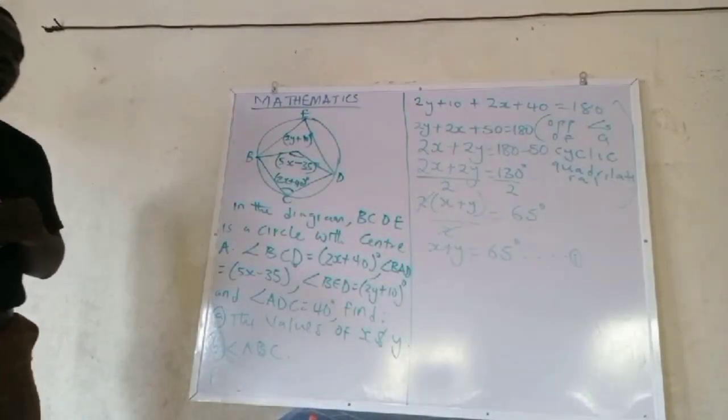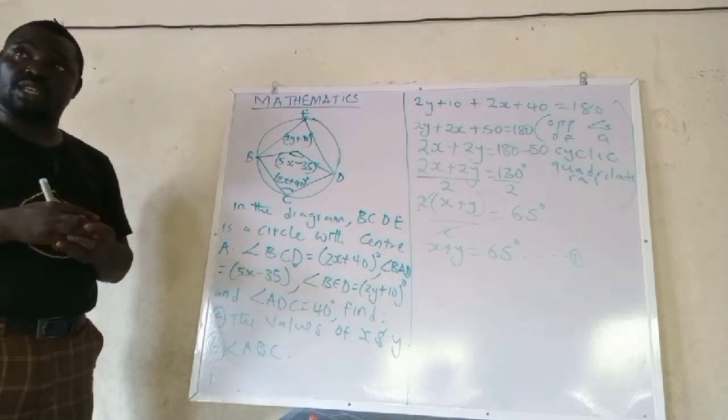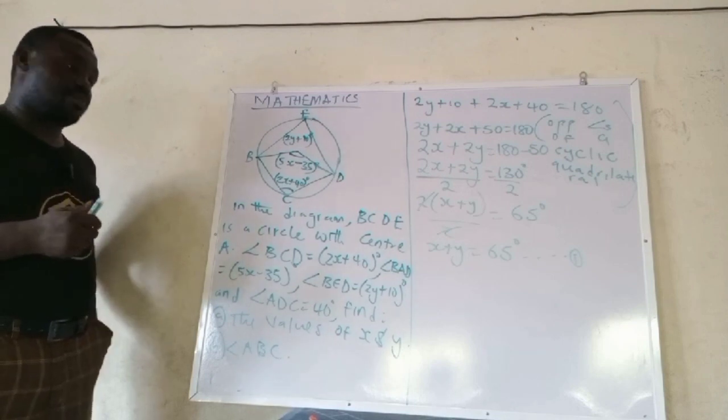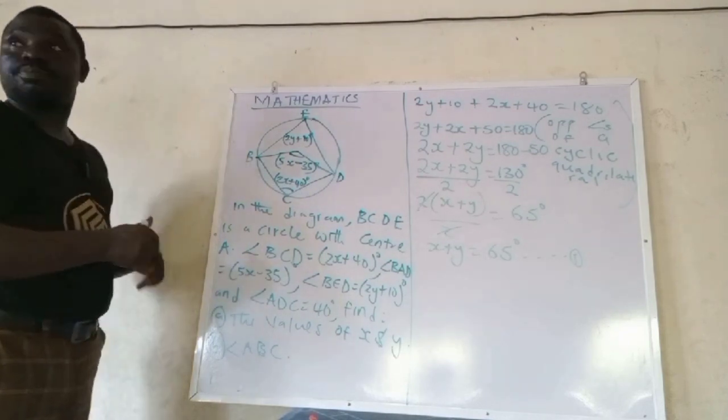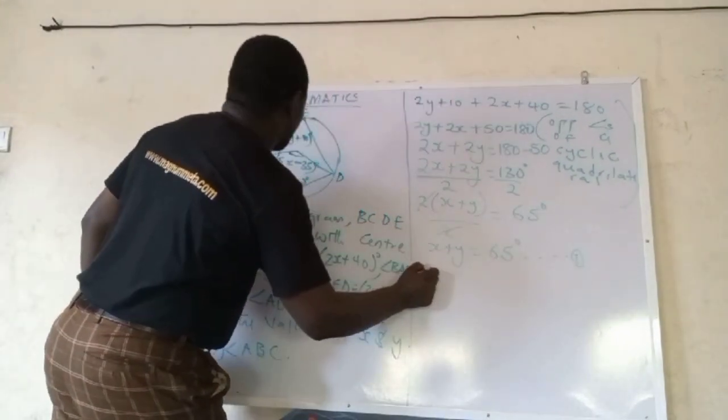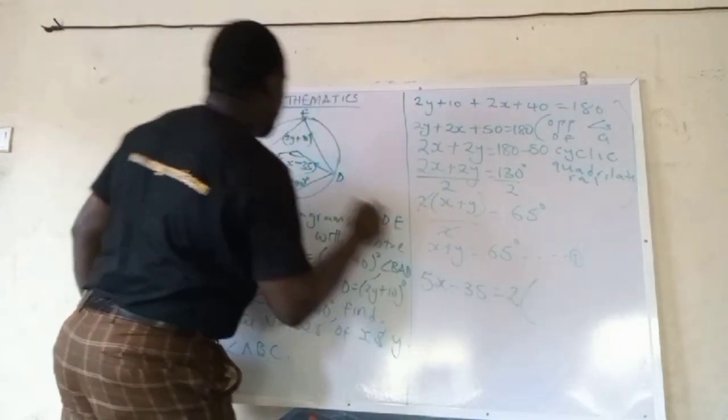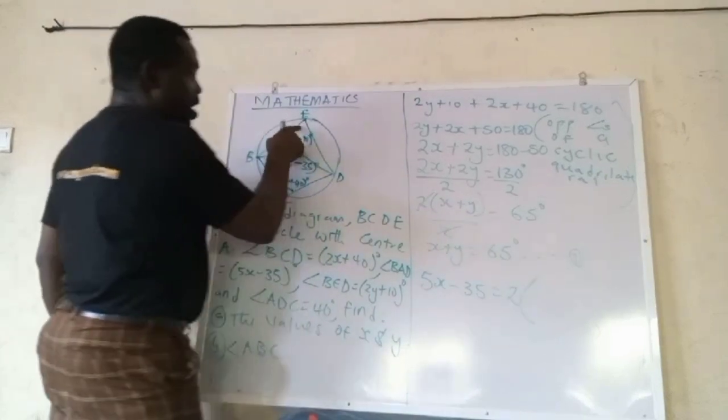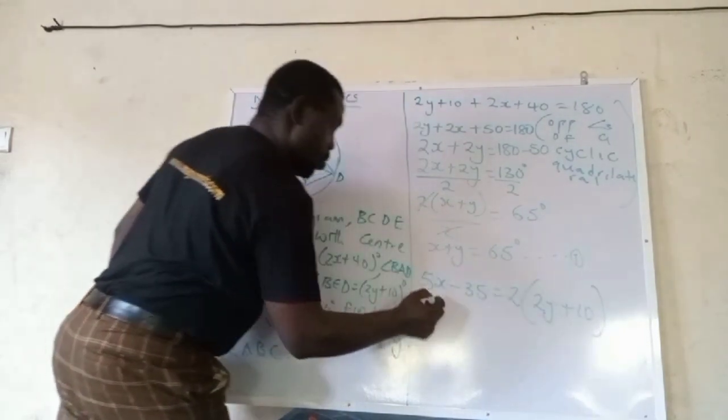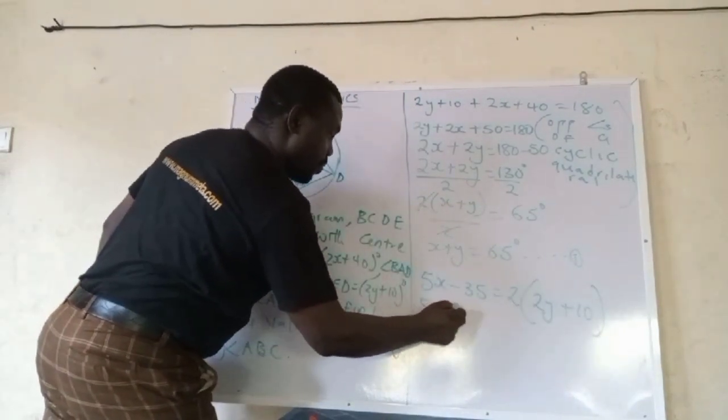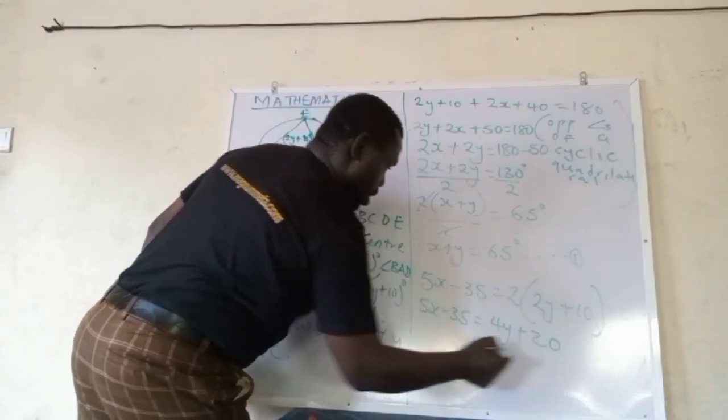So equation 2 we can easily come back again to one of the theorems we mentioned earlier. We did say that the angles subtended at the center is twice the one at the circumference. So the circumference here is 2y plus 10. So we have 5x equals to 4y plus 20.